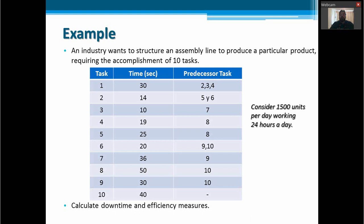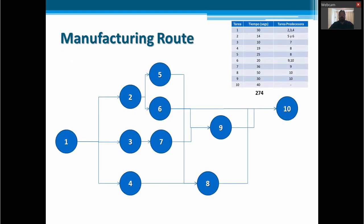For example, let's consider this situation when we have, again, 10 tasks, an operation time for every one of them, and the predecessor tasks as the chart follows. And we are going to consider that we are going to produce 1500 units per day and we have 24 hours a day to produce. And it is asked to us to calculate the downtime and efficiency measures. First of all, we have the manufacturing route with the information in the chart up here.